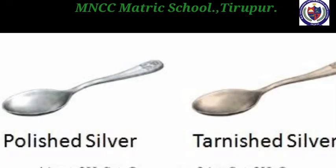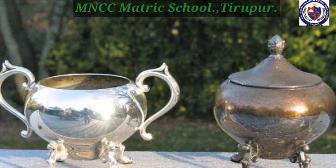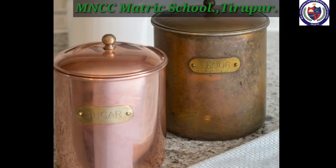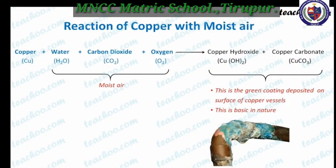Next we move to tarnishing of metal articles. Shiny metal surfaces lose their shining appearance due to chemical reactions. For example, silver articles become black on exposure to atmospheric air. Similarly, brass vessels which contain copper as one of the constituents develop a greenish layer on exposure to air for a long time. The equation is: copper plus water plus carbon dioxide plus oxygen gives copper hydroxide and copper carbonate. This greenish coating on the surface of copper vessels is basic in nature.